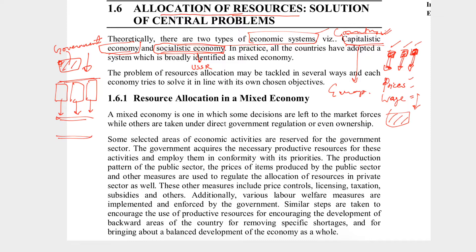Many European countries were capitalistic — UK, for example, ruled over us. That happened because the industrial revolution occurred there; factories opened, industry developed, and they needed raw materials and new markets. But these models are not in use now. The best way to run the economy is the system of mixed economy.